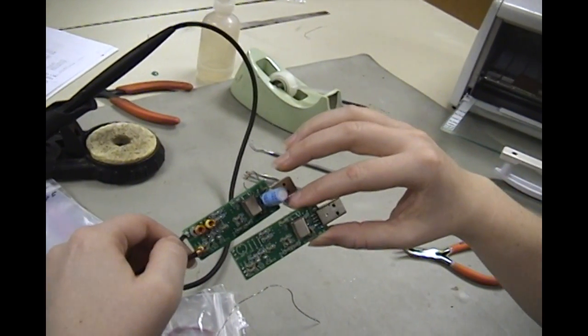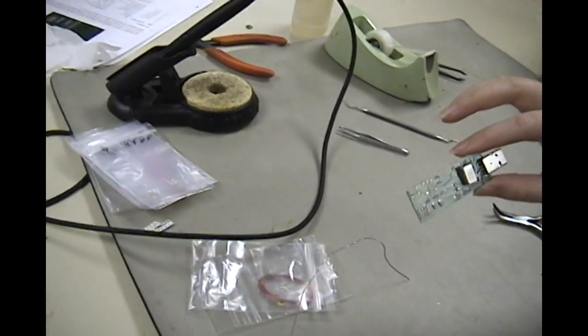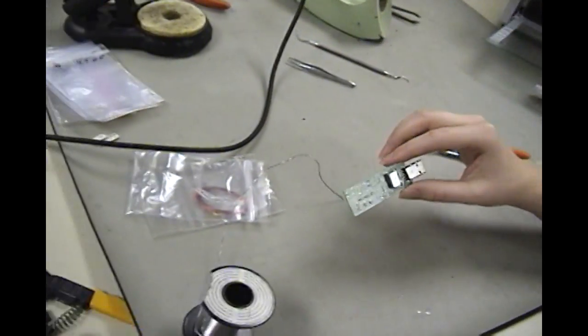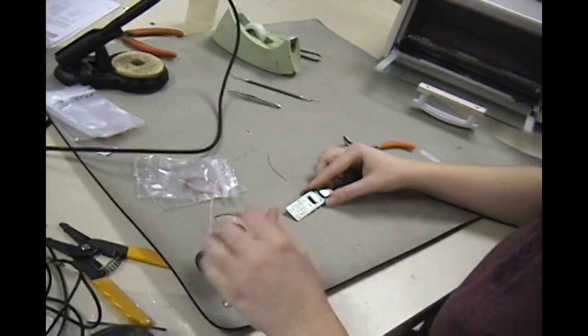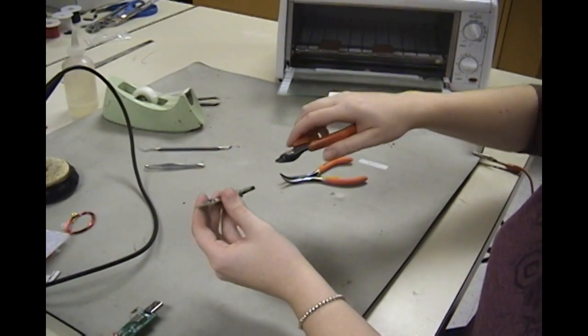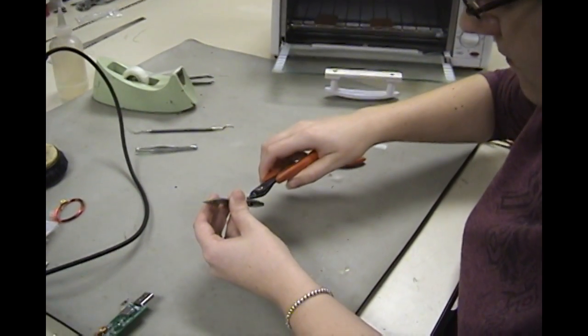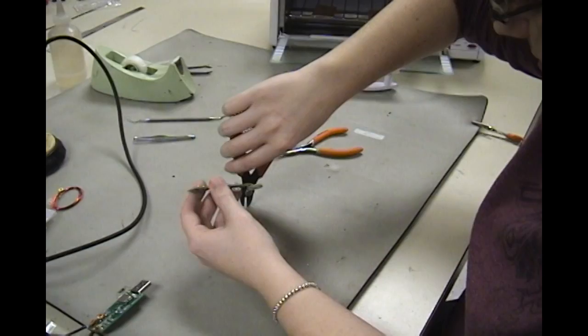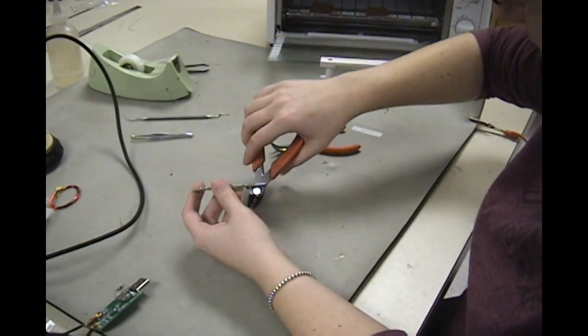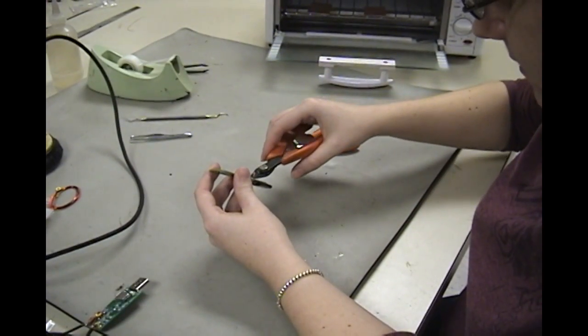Now, there are specific instructions how to do this on the website, which will also be provided. But, I will do it now in demonstration. Alright, now you're going to want to cut off the extra leads here. And save one of them, because we're also going to need to ground the case on the other side. So, get those off.